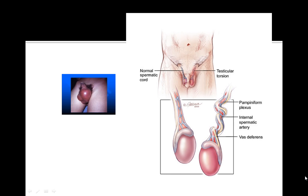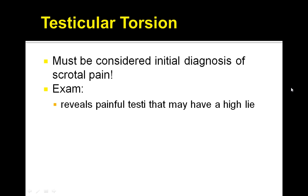Here is a diagram reviewing the pampiniform plexus, internal spermatic artery, and the vas deferens. It shows how testicular torsion leads to an acute process that typically is a surgical emergency and must be dealt with immediately. This differential must be considered as your initial diagnosis of any type of scrotal pain because this is considered to be an emergency.